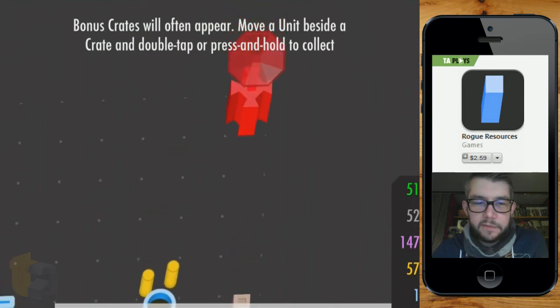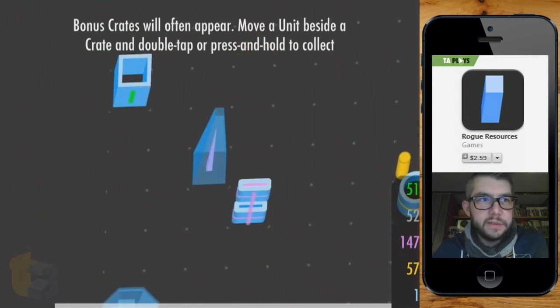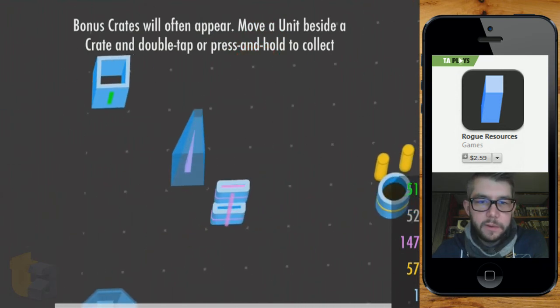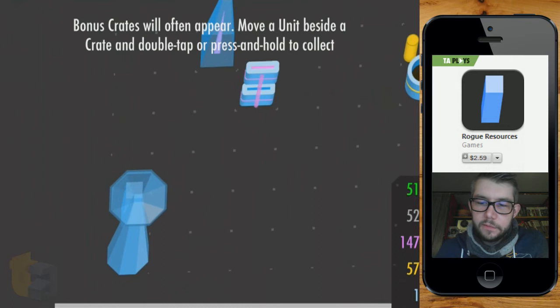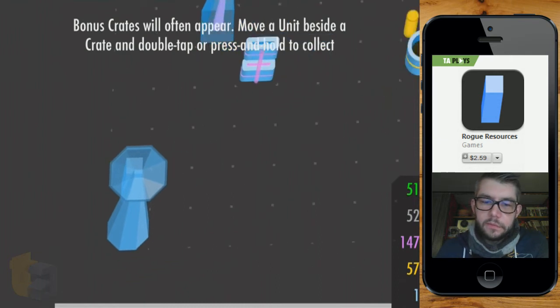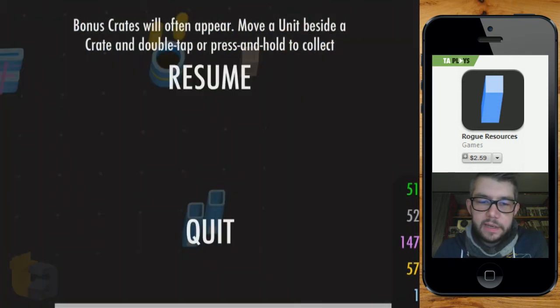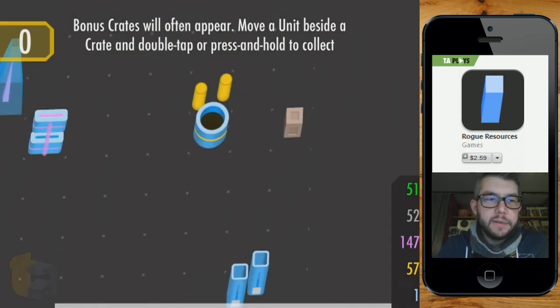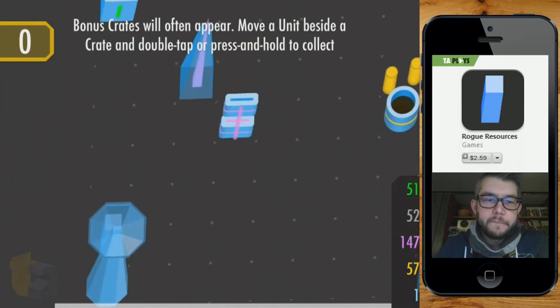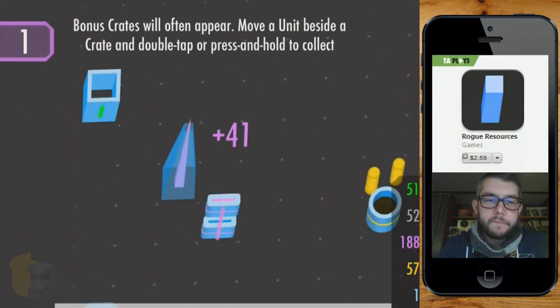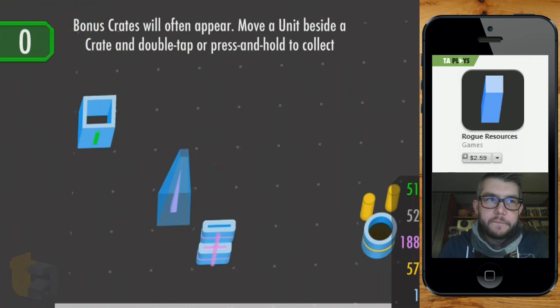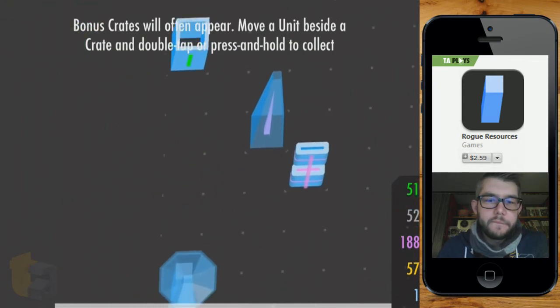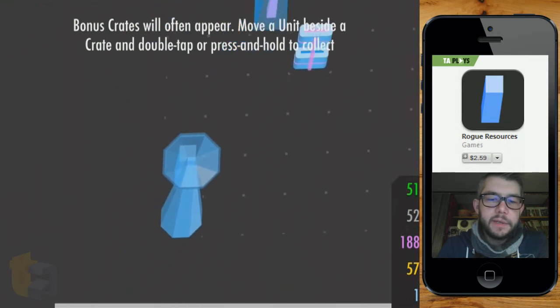The problem is I've turned all of my units into stuff. I don't really know where to tap in order to convert these guys back maybe. Oh, here we go. This dude's behind the satellite.